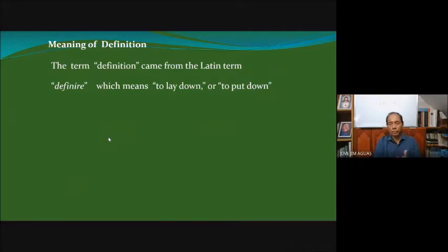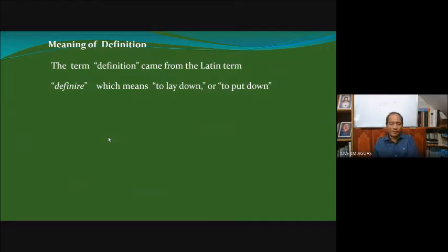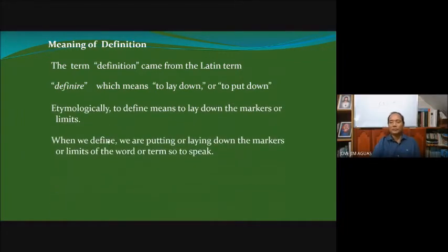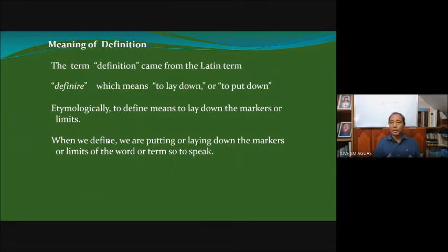If you want to tell people that your property extends up to a certain point, you have to put a marker there — you can plant a tree or put a concrete slab to mark that that is your property. So when we define a term, that's exactly what we do: we put down certain markers or limits. These markers are conceptual thoughts. For example, when you say a triangle is a polygon, 'polygon' is a conceptual marker; or a bank is an institution, 'institution' becomes a logical or conceptual marker.